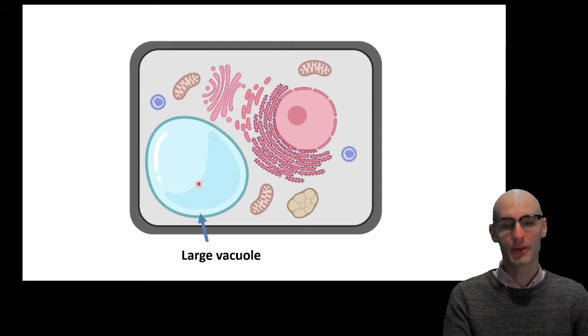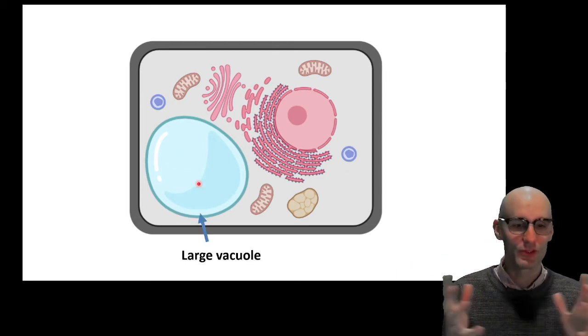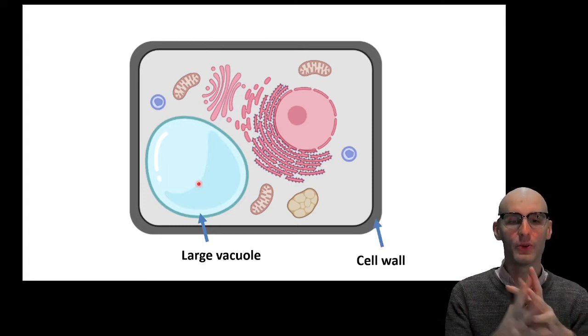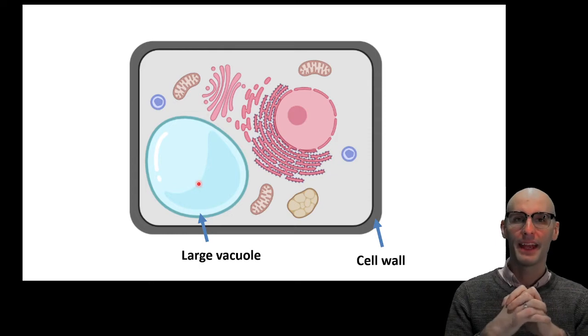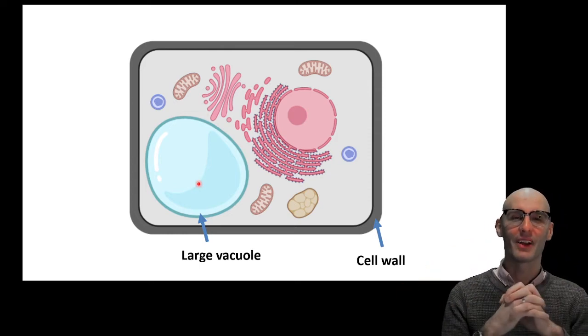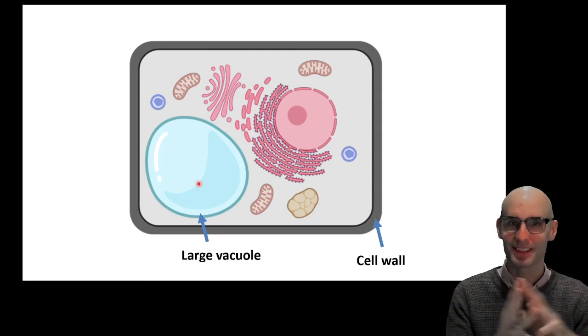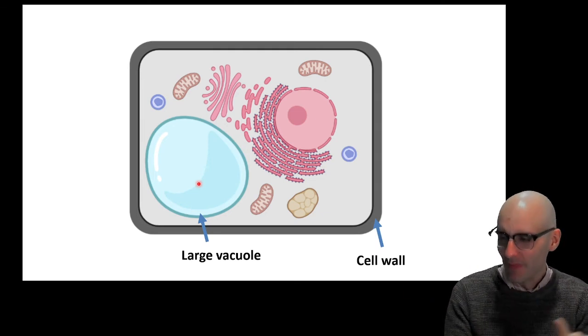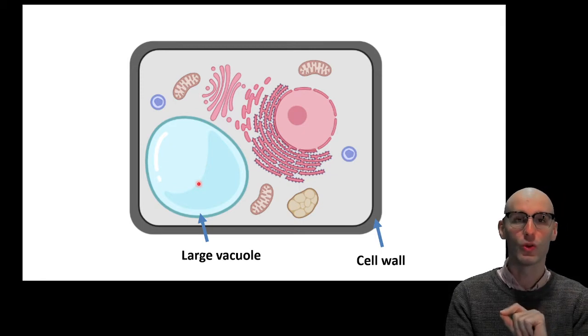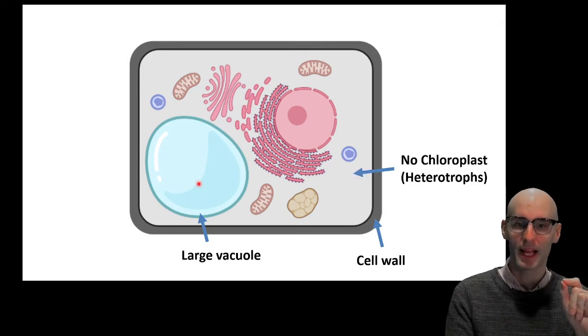So it has a large vacuole, and that's for storage mostly, and that's much more like plants. So it has this large vacuole. It has a cell wall, and this is much more like a plant as well. It's rigid, so our fungus can maintain weird structures like hyphae. And this is much more like a plant, but there are molecular differences between the cell wall of a fungus and the cell wall of a plant.